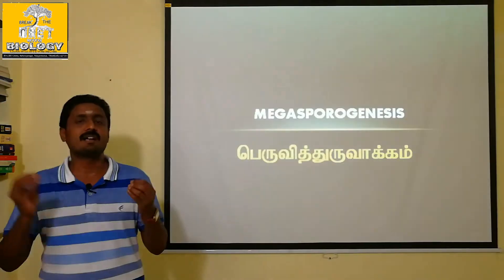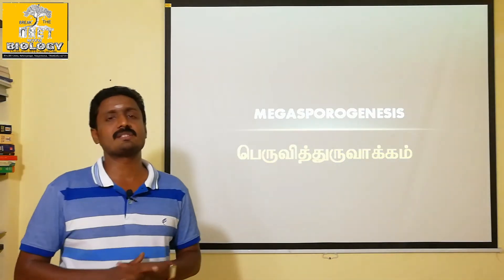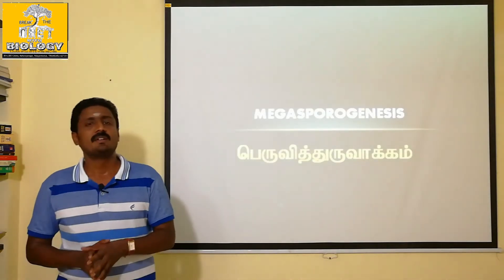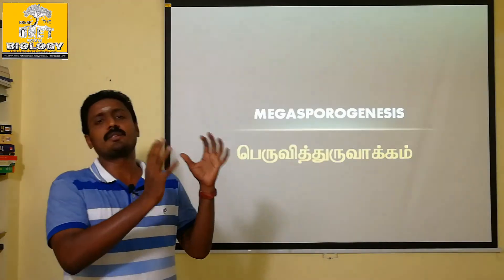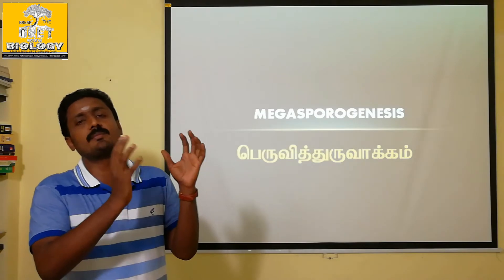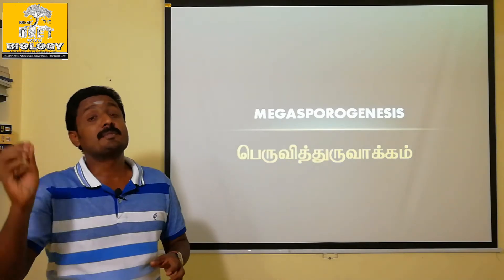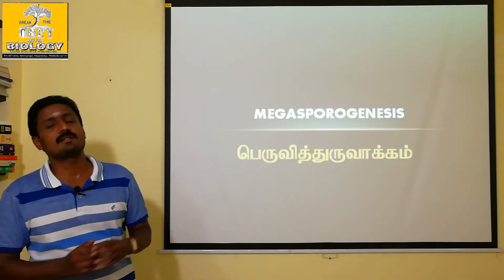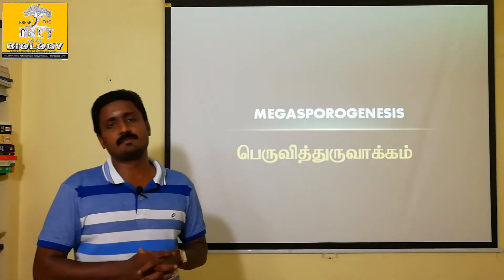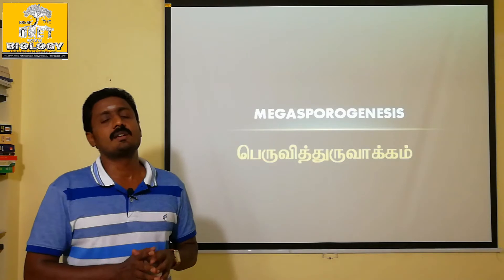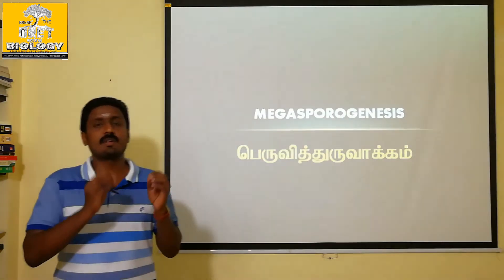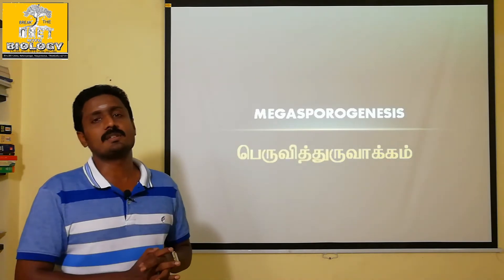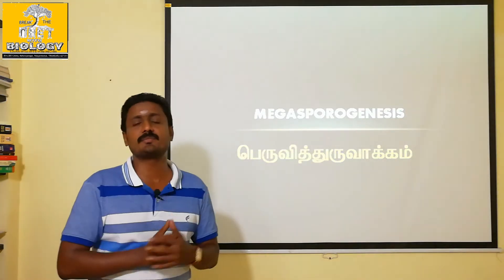Megaspore is a type that leads to the embryo sac. It contains egg, synergid, antipodal, secondary nucleus, and endosperm nucleus. In the anther there are microspores and pollen grains producing male gametes. For Megaspore, it is found in the ovary. The embryo sac is derived from Megaspore.